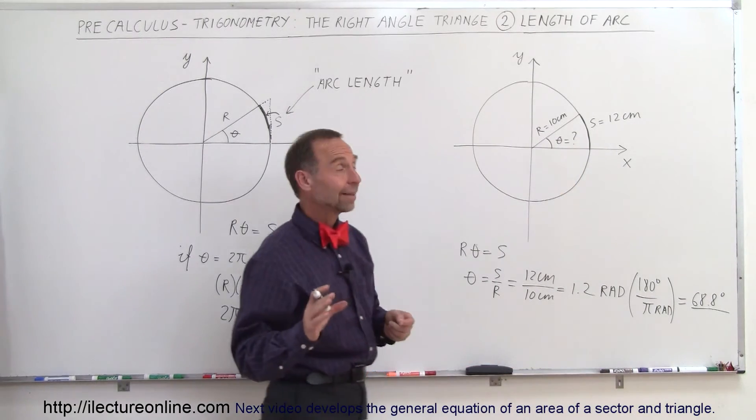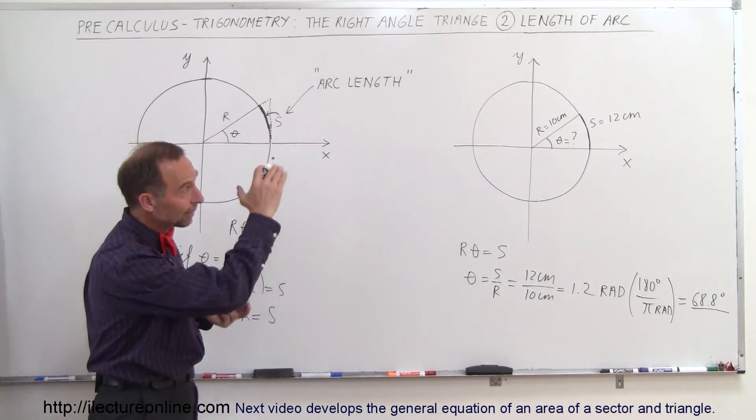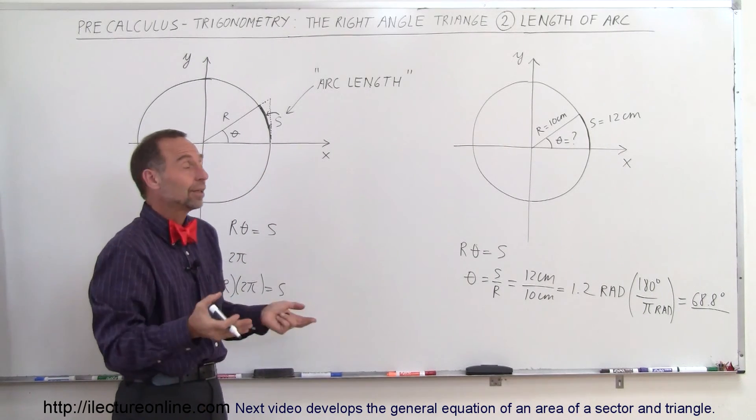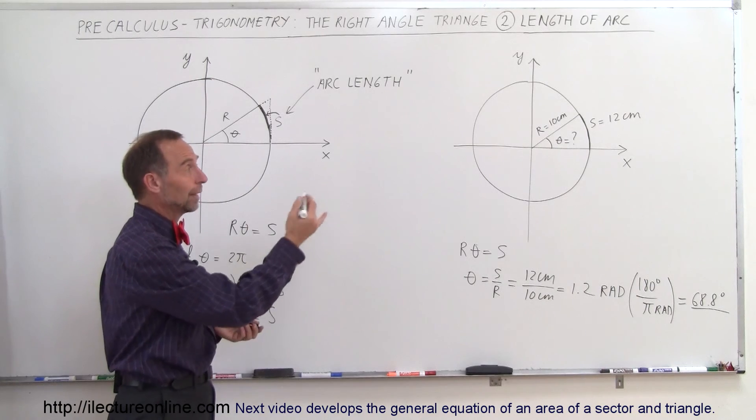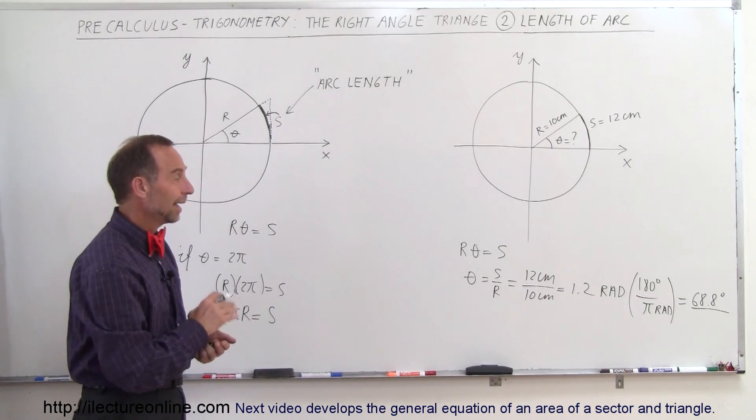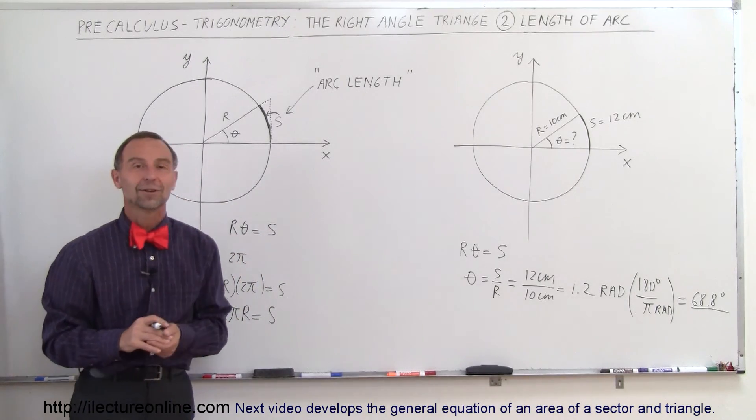And so that's how, when we have a problem where we're given the radius of the circle and we're given the arc length along the edge of the circle, we can from that calculate the angle. Or in this case we can calculate R, S, or theta if the other two are known. That's how we can understand what we mean with the arc length of a circle.